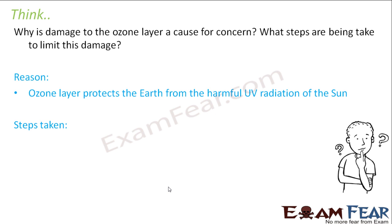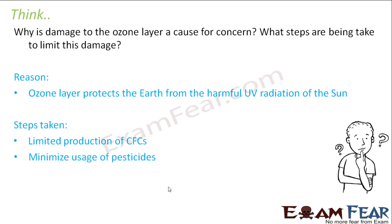What steps are being taken to limit this damage? First, limited production of CFCs — chlorofluorocarbons, which are generally used in the refrigerator and air conditioner industries. These chlorofluorocarbons produce chlorine at the higher levels of atmosphere, and one molecule of chlorine has the capability to destroy 1 lakh ozone particles. So the production of CFCs has been limited and is in the process of being banned. We should also minimize the usage of pesticides, and use eco-friendly household cleaning products, as these also interfere with the existence of the ozone layer.